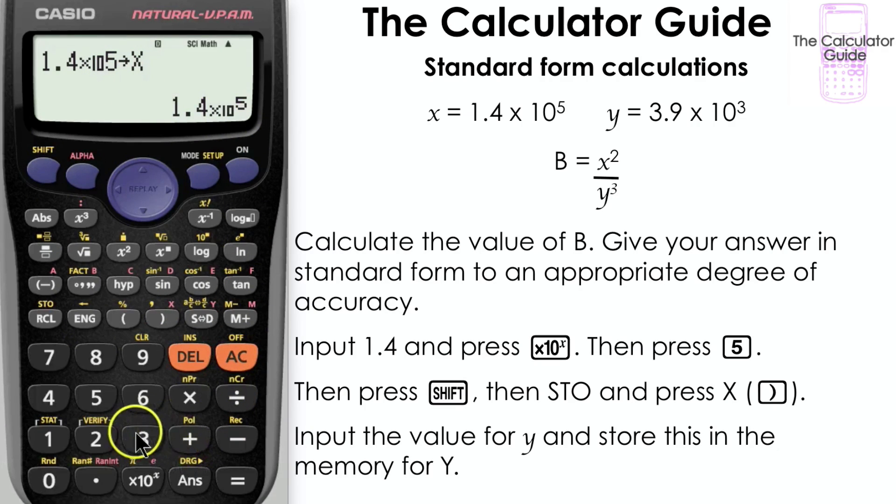Now input your value for y and store this in the memory for y as you did with x. Incidentally, you can always write standard form numbers by writing out times 10 and then using your power button, or in this case we can use the cube button. Press shift, store, and then y to enter this value into the memory for y.